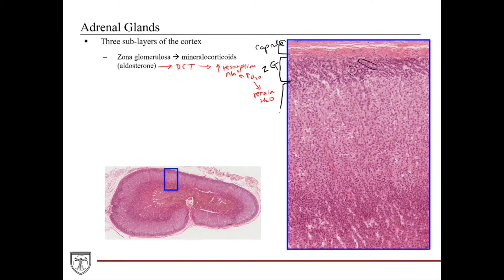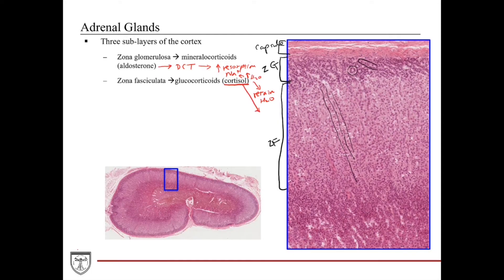Deep to the zona glomerulosa, taking up about 70–80% of the adrenal cortex thickness, is the zona fasciculata, where endocrine cells are organized into fascicles — nice even rows or cords of cells. The endocrine cells of the zona fasciculata secrete glucocorticoids, the most prominent example being cortisol, also commonly known as the stress hormone. Cortisol has many different functions, but its general effects include an increase in gluconeogenesis, changes in fat metabolism, and suppression of inflammatory reactions around the body.